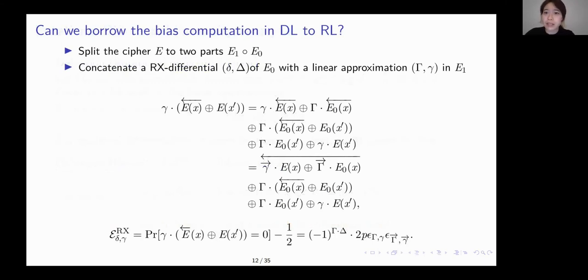So can we borrow the differential linear bias computation here? Here we tried the first approach. In fact, we can borrow the previous idea on differential linear of separating a cipher into two or three parts. And we find good rotational differentials and linear approximations to concatenate. So here is the detailed deduction on computing the bias. Assume that we have a good rotational differential on the first half of the cipher and a good linear approximation on the second half. It can be shown that a similar formula can be achieved. But instead of the bias of the linear parts squared, we have two linear biases here, where the masks are rotated. But using this formula can be inaccurate in some ciphers because we didn't consider the connectivity effect.